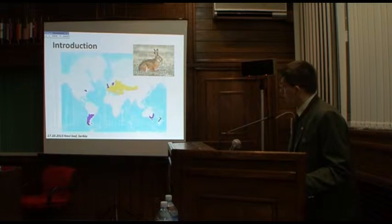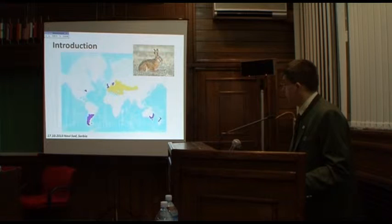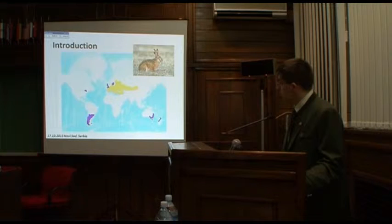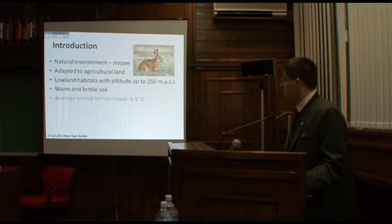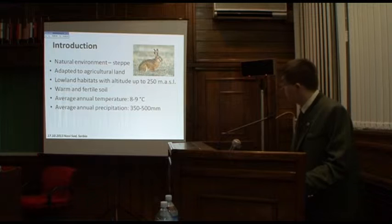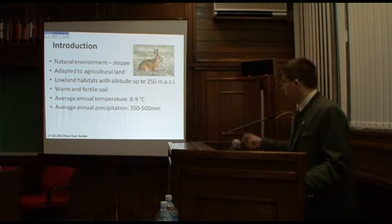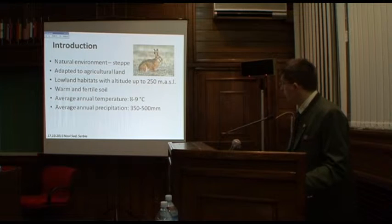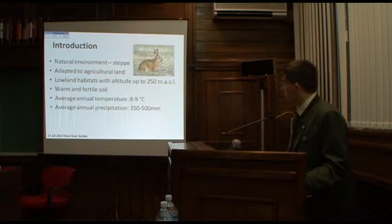The brown hare is one of the most widespread species in the world, covering almost all continents. Concerning natural conditions, it prefers lowland habitats up to 250 meters above sea level, with an average temperature between 8 and 9 degrees Celsius and 350 to 500 millimeters of average annual precipitation.